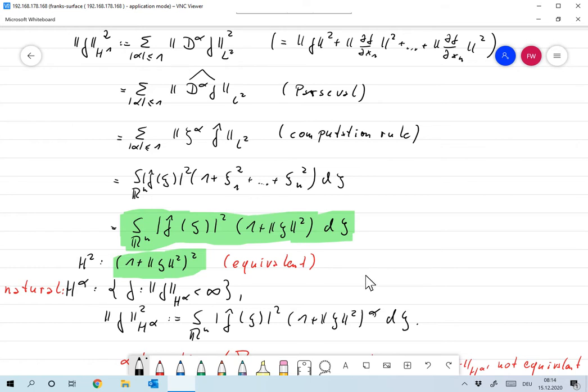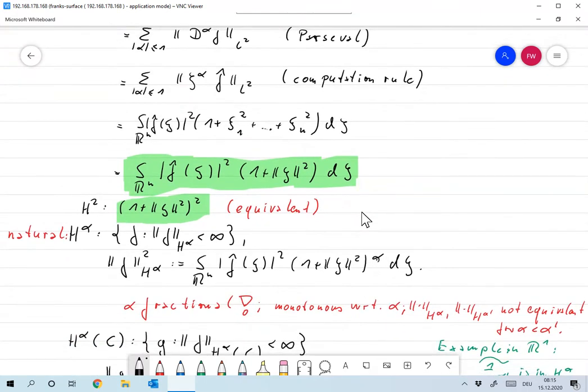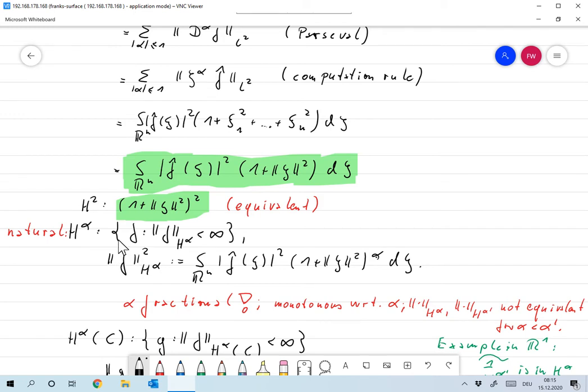Now if we do the same thing for H^2, so that's the space of twice weakly differentiable functions, then we would add the second derivatives over here. We could do exactly the same thing and up to one or two constants what we would get then is the same thing as here only we wouldn't have 1 plus norm psi squared here but 1 plus norm psi squared squared. So this gives rise to the idea that we could characterize H^alpha as the space of all functions f where the H^alpha norm of f is smaller than infinity, and the H^alpha norm is declared as the integral over R^n f head of psi squared 1 plus norm psi squared to the alpha d xi and of course you need to take the square root to get the norm.